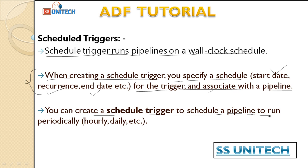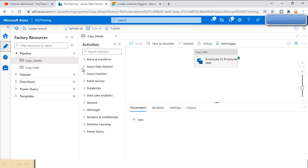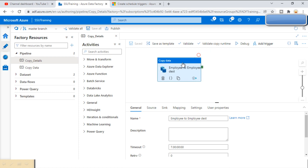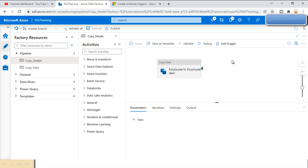We can create the schedule trigger to schedule a pipeline periodically — on an hourly basis, daily basis, monthly basis, and other options as well. Let's go to the browser and see this in practice. Here, as you may remember, we have created this pipeline, and this pipeline is going to copy data from Azure SQL from one table to another table.